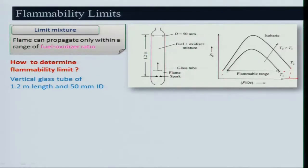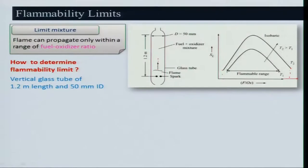Why 50 mm diameter? If smaller, heat loss affects the limit measurement; if bigger, it is hazardous to handle. The direction of flame propagation also matters: when propagating upward, hot gases help push the flame, giving different limit data. Downward propagation is less affected by buoyancy-driven natural convection of hot gases, so downward propagation is preferred for consistent flammability limit measurement.